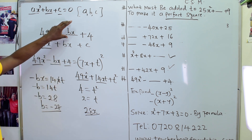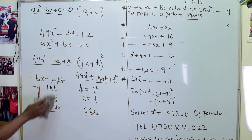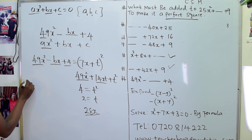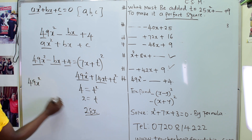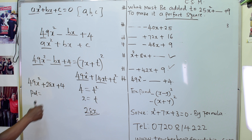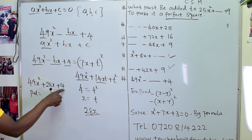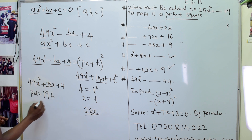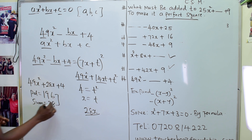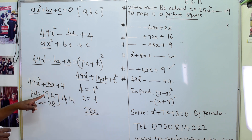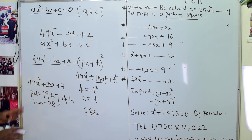So the missing term was 28x, giving us 49x squared minus 28x plus 4. The product is 49 times 4 equals 196, and the sum is 28. The factors are 14 and 14, because 14 times 14 is 196 and 14 plus 14 is 28. Since it has factors, we say it is a perfect square.